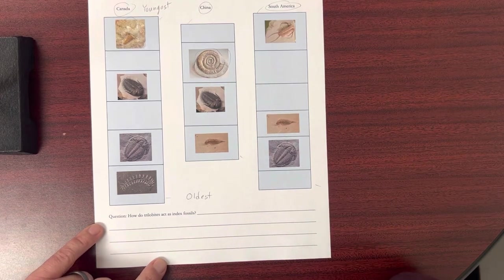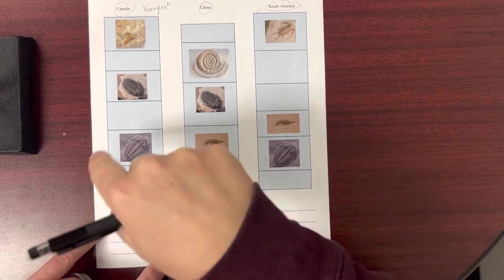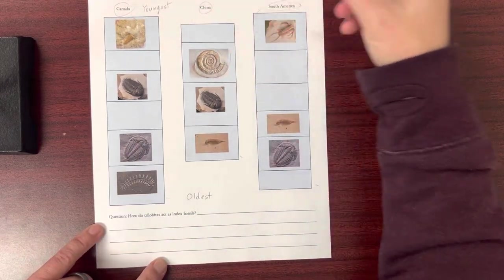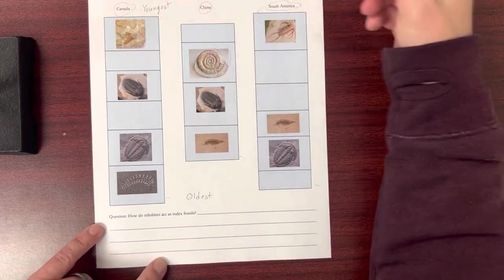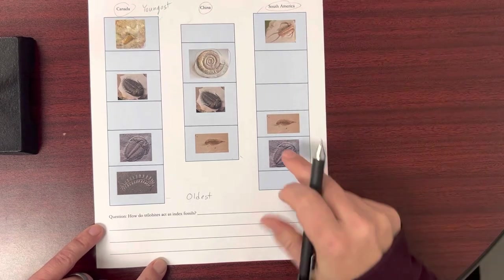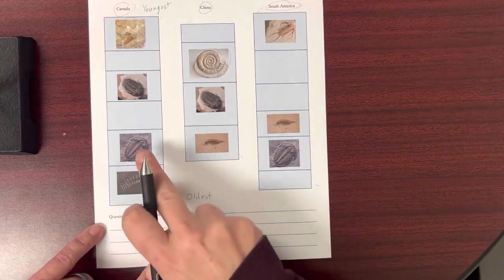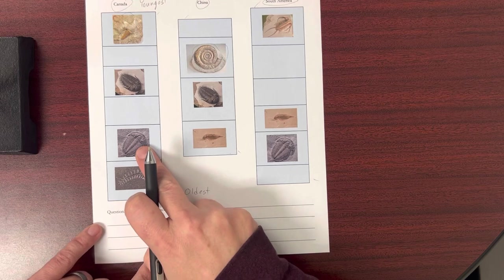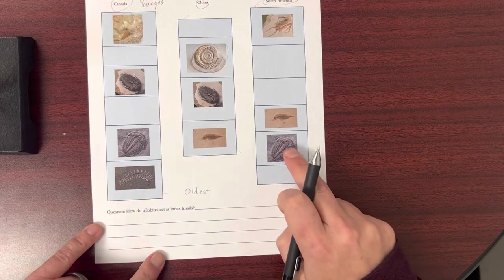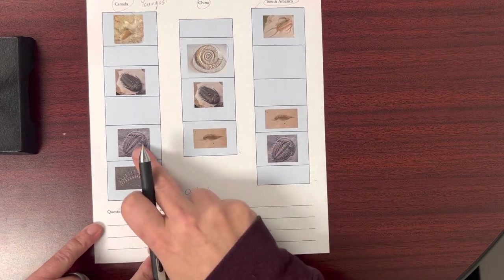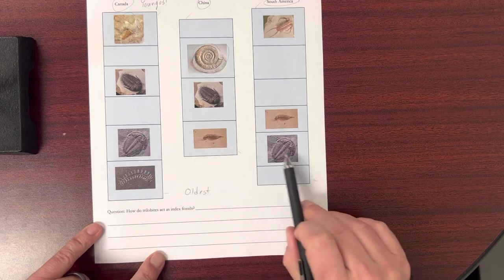What I'm going to want you to do is match layers from three different parts of the world: Canada, China, South America. Well, what I'm looking at, for instance, I see this trilobite and I see another trilobite over here. So we think, okay, is this all the same age?